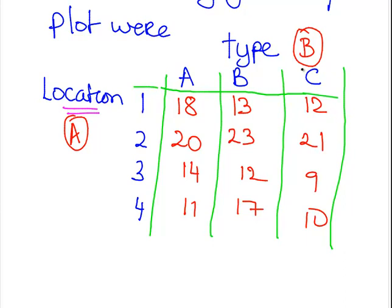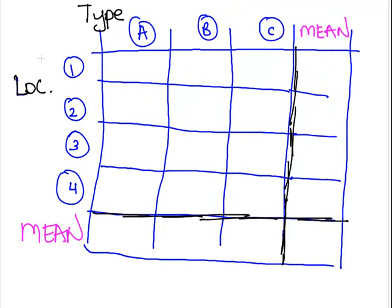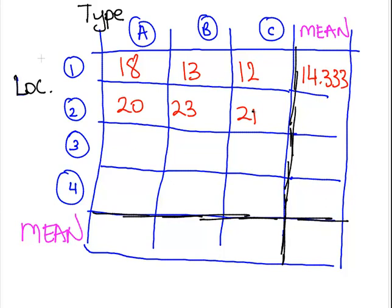Let's move on from that. The first thing we would do is we would get the mean of each of the rows and columns. The mean of 18, 13, and 12, the row mean for that is 14.333. The next one is 20, 23, 21, and the row mean for that is 21.333.